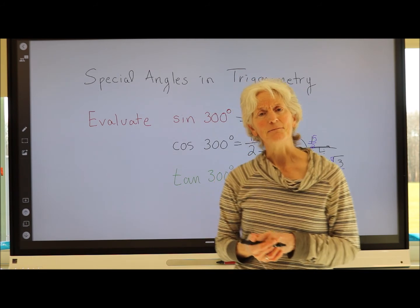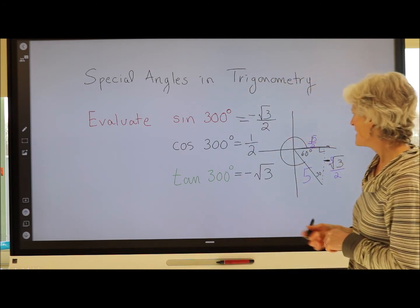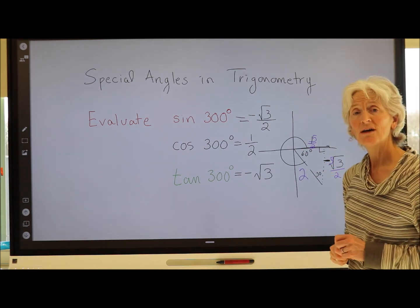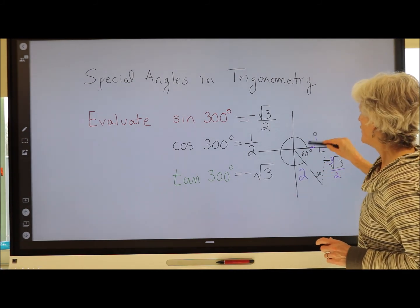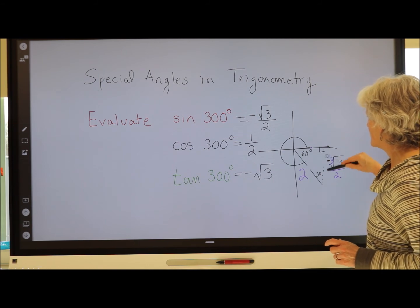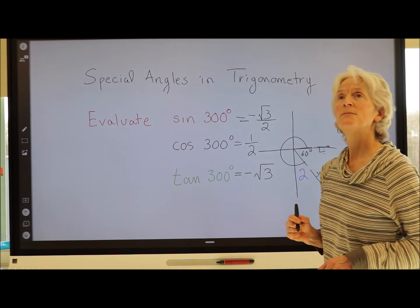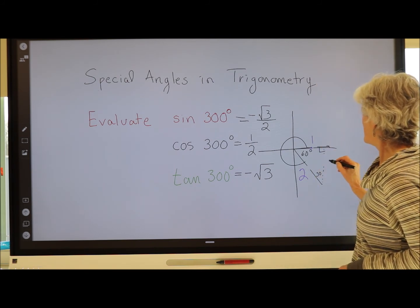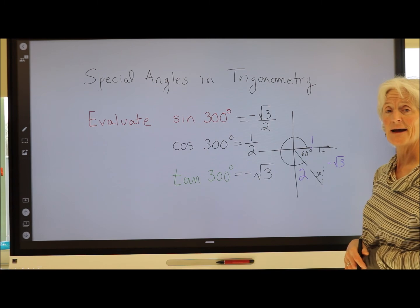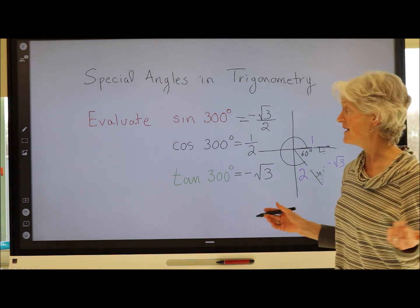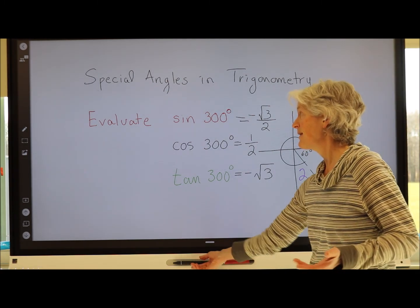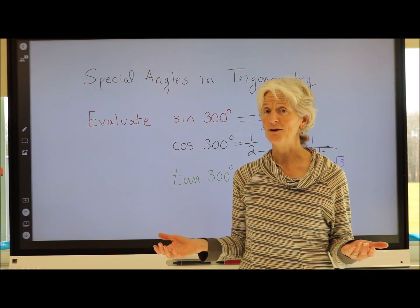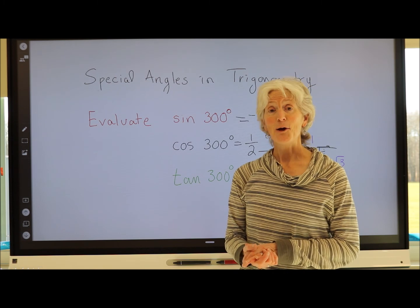I find it handy to use 2 as my rotating arm for both the 30-60-90 and the 45-45-90 triangle — it just makes the math easiest. But if you prefer the unit circle or some other number, that's fine too. That's what's so cool about ratios. I hope this was helpful!